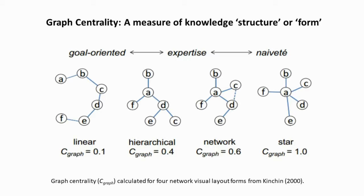One of the network analyses I use is graph centrality. In my research, all knowledge structures are categorized into four shapes: linear, hierarchical, network, and star shapes. Each shape indicates different conceptual typologies. Typically, the optimal relational complex knowledge structure falls between 0.4 to 0.6, especially in the context of science. But recently, while working with Britt, I realized that science text needs to be subcategorized — for example, argumentative science text, explanatory science text — and I'm planning to categorize science text into these subcategories using representative letters.